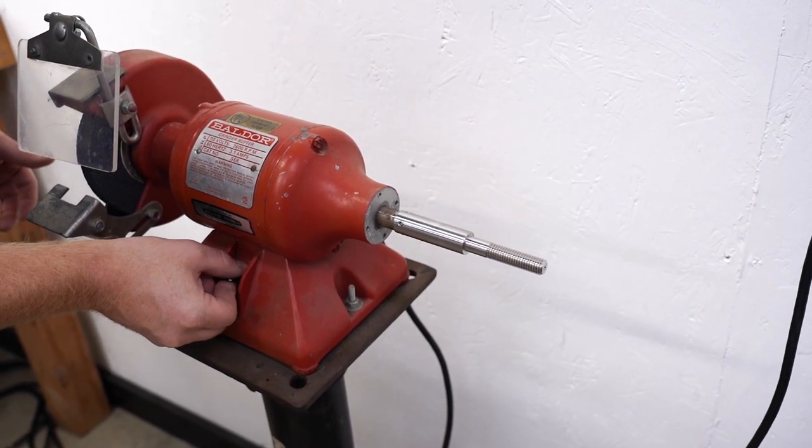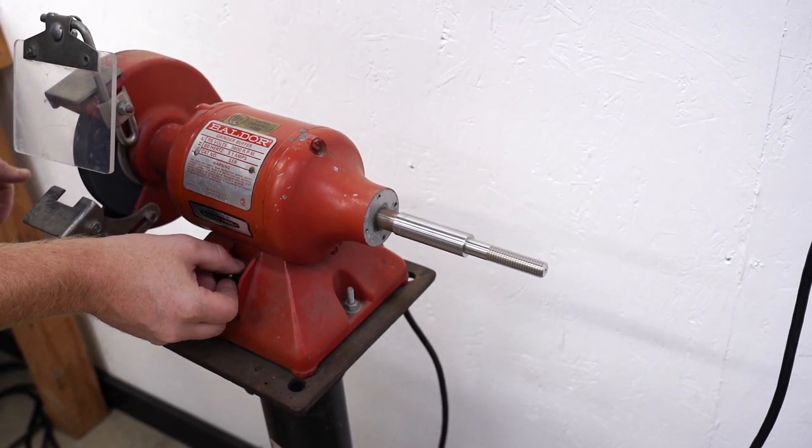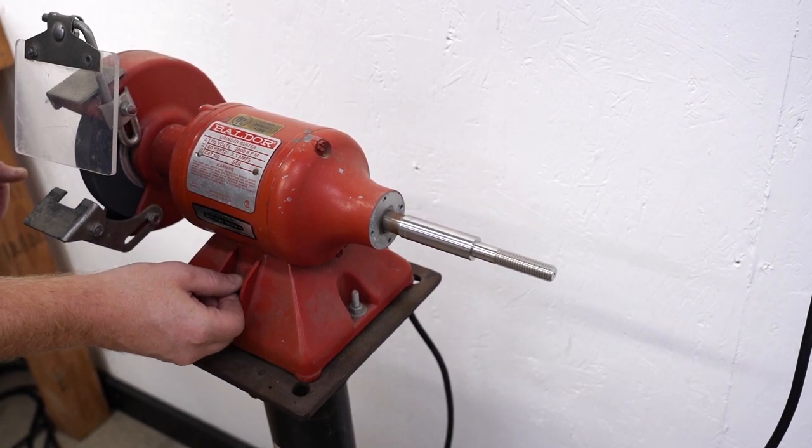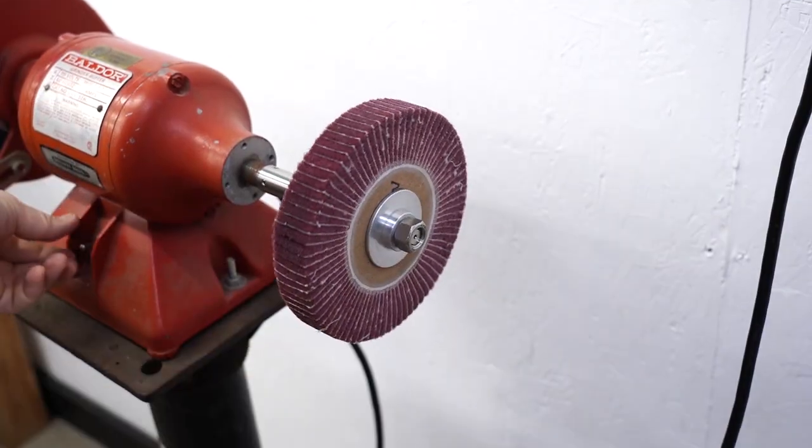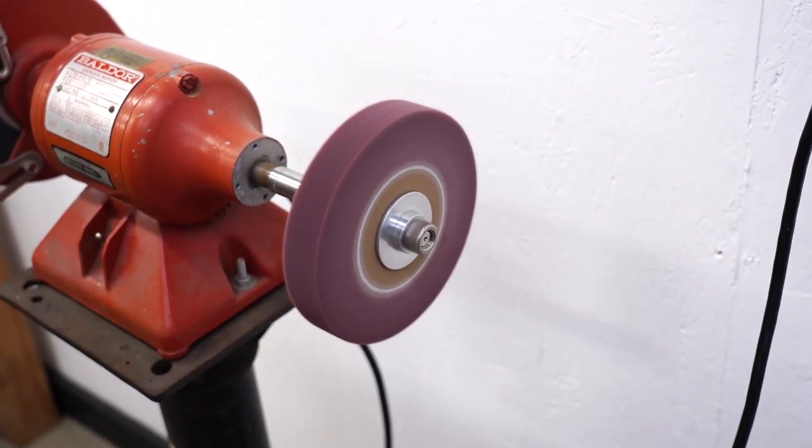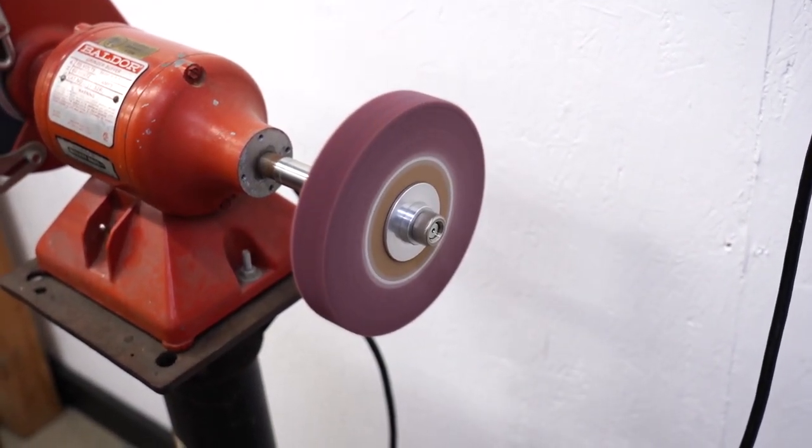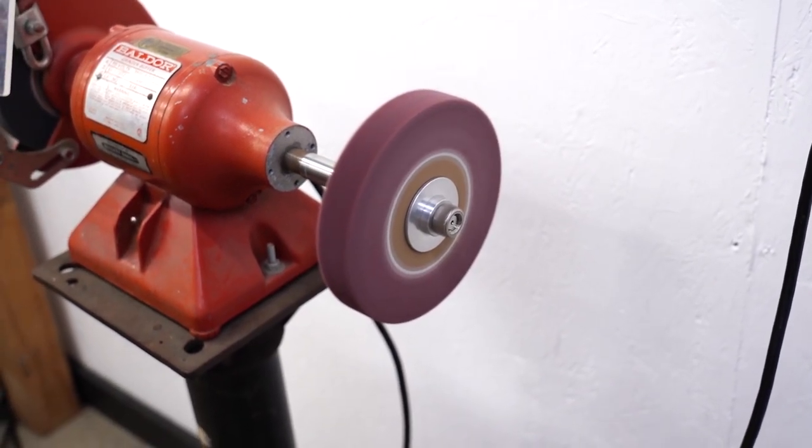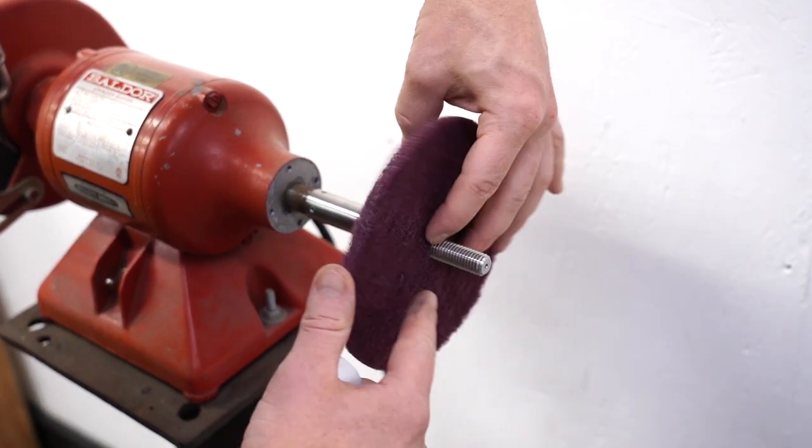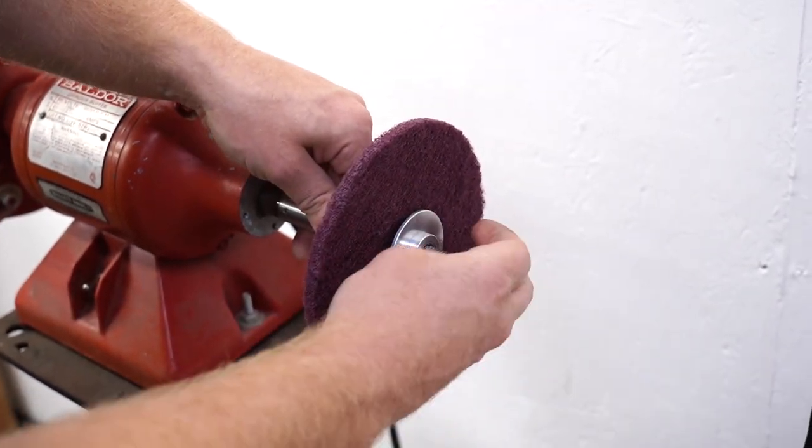Before we mount a wheel, I'm going to spin the motor up. Looks like it is spinning pretty straight. Let's mount a wheel and see if there's any vibration. That is spinning nice and smooth. You can see the motor isn't walking on the concrete there. I'm going to mount this cleaning wheel here and show you the difference.